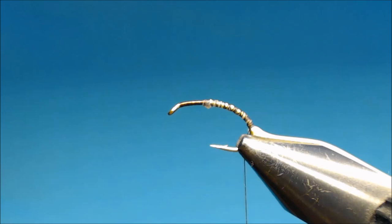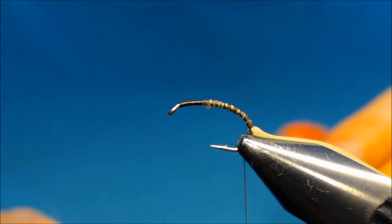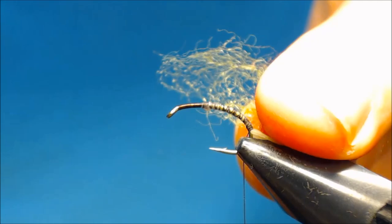And for the body of the fly I use some dubbing. And for this I use some rabbit fur. This is a pale green color. And I'll mix it with a bright green.